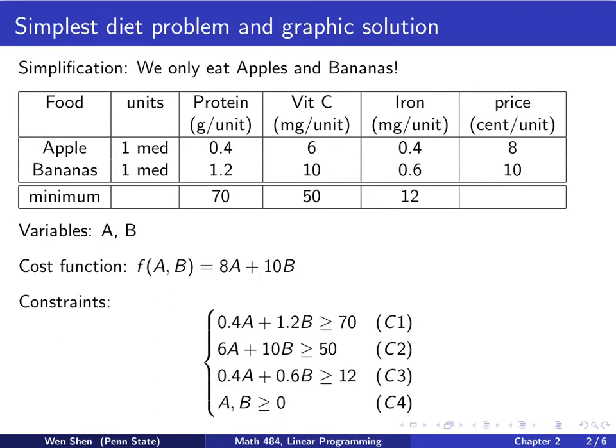We now collect the constraints. The total number of constraints remain the same, because we have to make sure the minimum of these three groups of nutrients must be satisfied. What is simplified is the left-hand side of this inequality now contain only two terms. For protein, we'll have only 0.4 times apple and 1.2 times banana. I add them up, and it must meet the minimum requirement, which is 70. And the same for vitamin C and for iron.